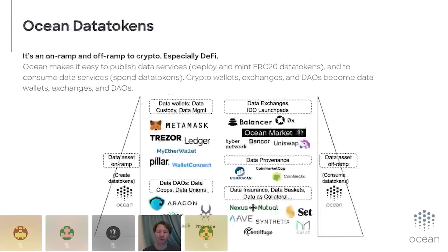If there's one slide to remember, it's this one about data tokens. Ocean and Ocean data tokens can be viewed as an on-ramp and off-ramp of data to crypto and especially DeFi. On the left, Ocean is the on-ramp that creates data assets from data services and data sets. Every single data asset is its own ERC20 token. On the far right, you can consume those, and Ocean helps you with that too.